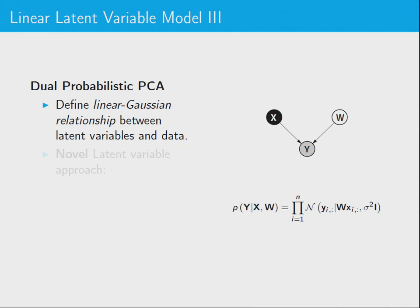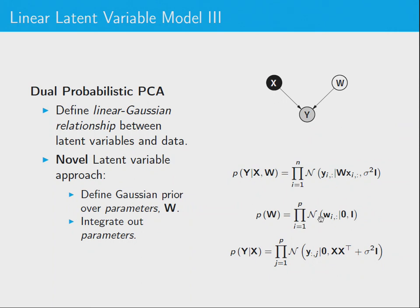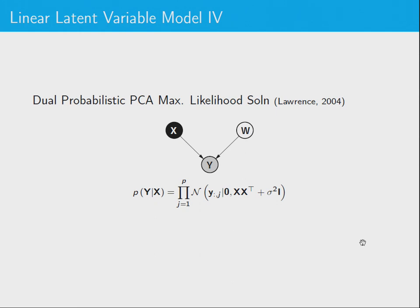Define a linear Gaussian relationship between the latent variables and data. So this is the same likelihood as before, but here's a novel latent variable model approach. Define the Gaussian prior over the parameters. So that's like linear regression. Yes, we did that as well. I told you my research career was based entirely on this, and you didn't believe me. Define a Gaussian prior over parameters W, integrate out those parameters, which we've done as well. We happen to do it over a unidimensional output and this is over a multivariate output, but the result is the same. You just get independence across the outputs, and this covariance here, XX transpose. That arises because these W and X's always appear as this inner product.